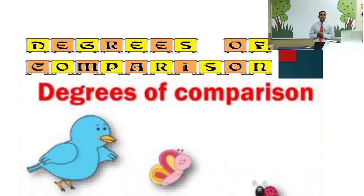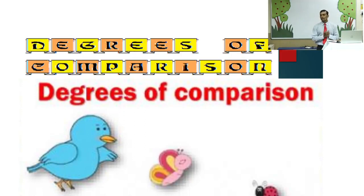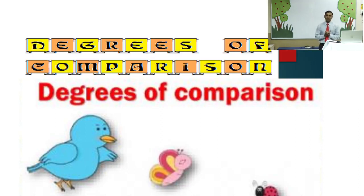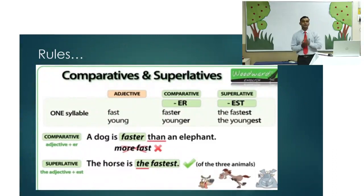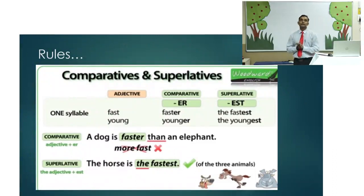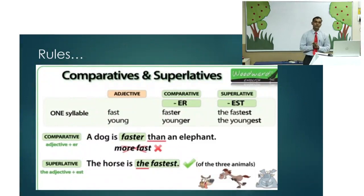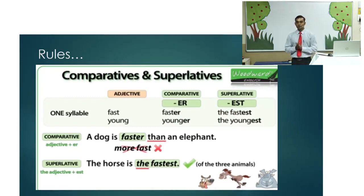That's right — we add 'er' for the comparative degree, and for the superlative degree we add 'est'. Besides that, we add 'er' for the comparative degree followed by the word 'than', and for the superlative degree we use the article 'the' before the superlative degree.